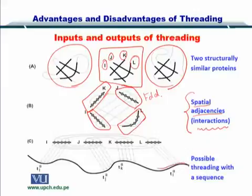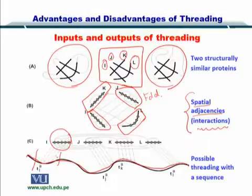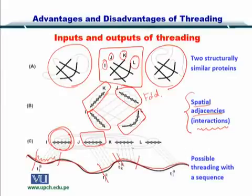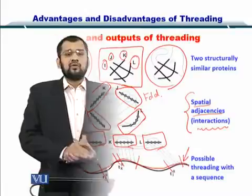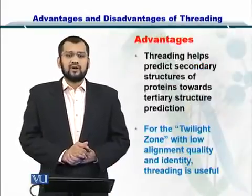If given a sequence for which you don't know the structure, you can compare portions of this sequence to the secondary structures and declare each portion to be taking up a specific structure. Similarly, one portion will take up j, another will take up k, and the last portion of the sequence will take up secondary structure l. In this way, you have predicted the structure for this sequence.